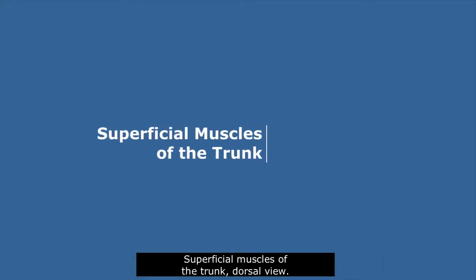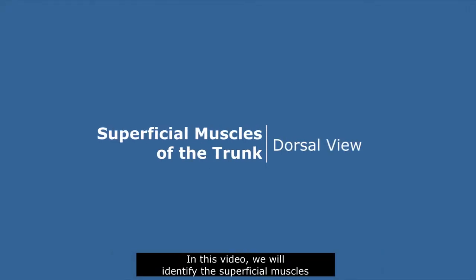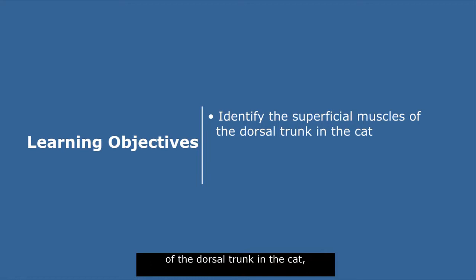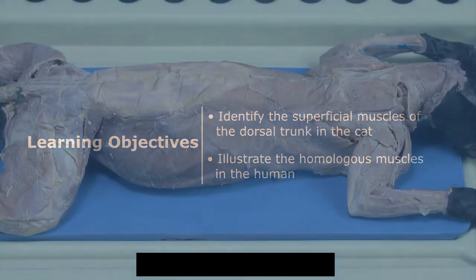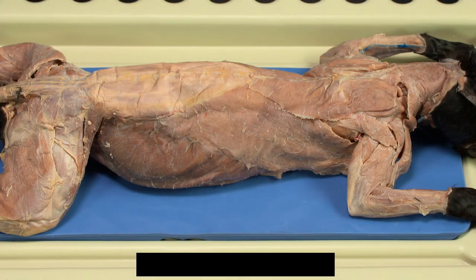Superficial muscles of the trunk, dorsal view. In this video, we will identify the superficial muscles of the dorsal trunk in the cat and illustrate the homologous muscles in the human. We begin on the dorsal side.